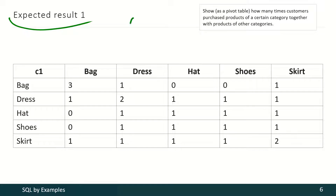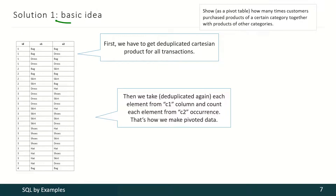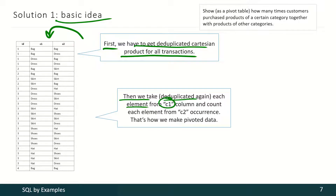Here is the expected result. These numbers on the main diagonal may be inaccurate, but those numbers are not of interest here. We only need all other numbers in this table. The basic idea for this solution is that first we have to get a deduplicated Cartesian product for all transactions, producing a temporary table. Then we have to take deduplicated each element from one column and count each element's occurrence from another column, and that's how we make our pivoted data.